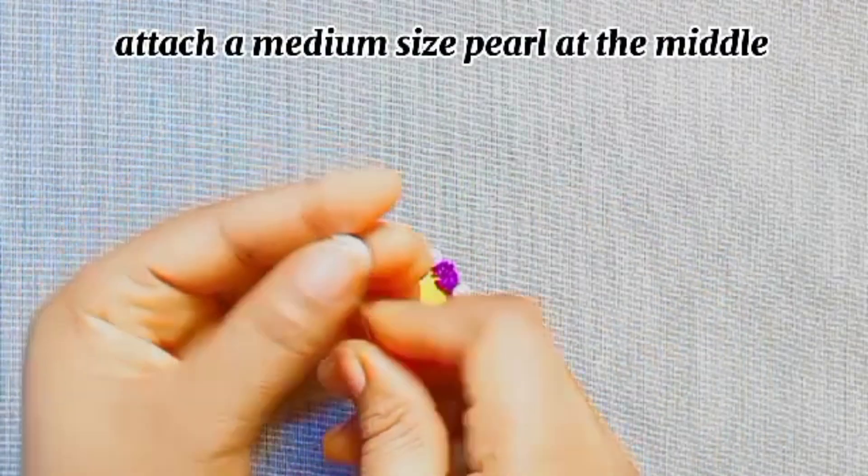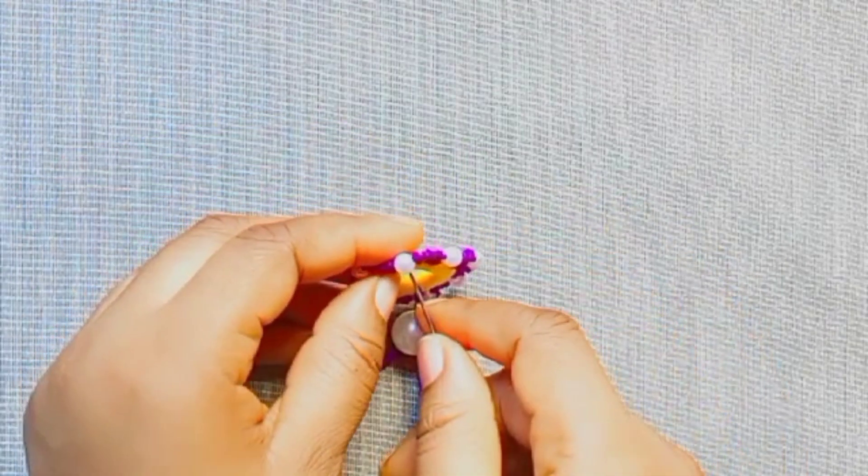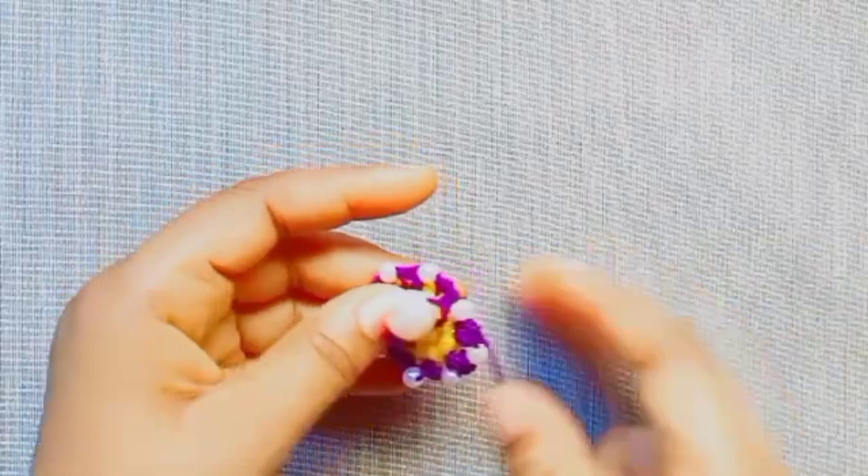At this point, attach a medium size bead right at the middle of the woolen flower to make it seamless and beautiful.